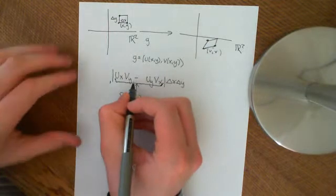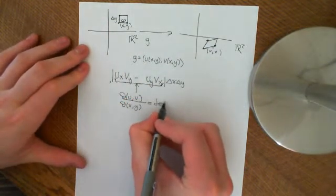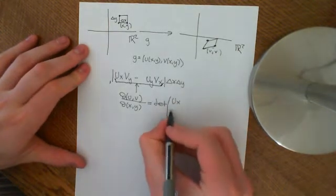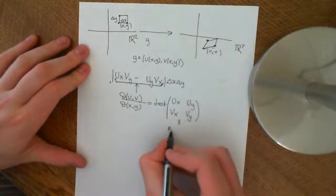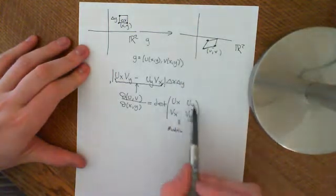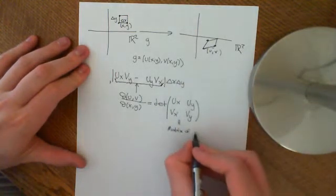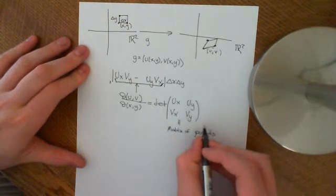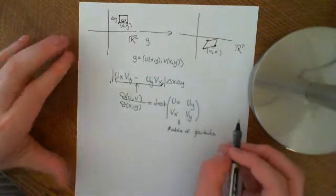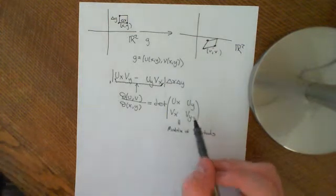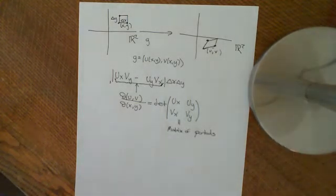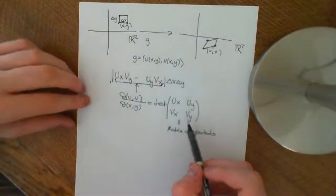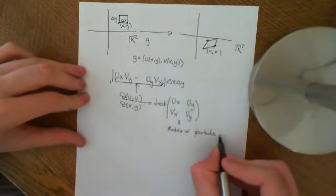This combination of partial derivatives is known as the Jacobian, and it's actually equal to the determinant of the matrix: ux, uy, vx, vy. This matrix is called the matrix of partial derivatives, and it's very, very important. If this function is differentiable, you can calculate it. You should think of it as the higher-dimensional analogue of the derivative in single-variable calculus — in multivariable calculus, a single partial derivative doesn't give you enough information, but this matrix contains all of the derivative information.